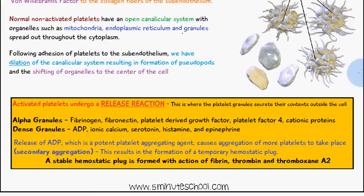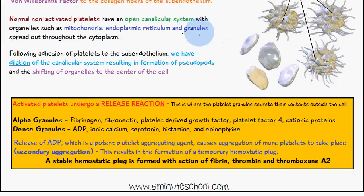Activated platelets undergo a release reaction, and this is where the platelet granules secrete their contents outside the cell. The normal non-activated platelets have organelles such as mitochondria, endoplasmic reticulum, and granules — and these granules contain substances. When they're activated, they release these substances inside the granules.